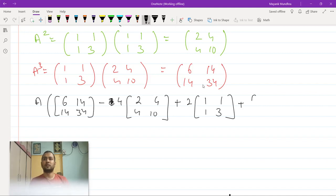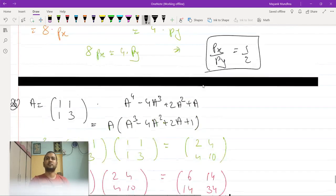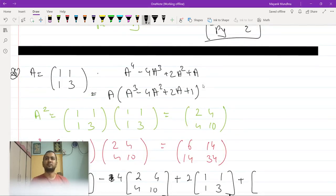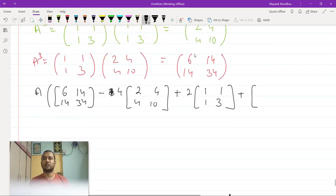Plus the identity matrix right. So when you take the A out this becomes I so this becomes [[1,0],[0,1]].